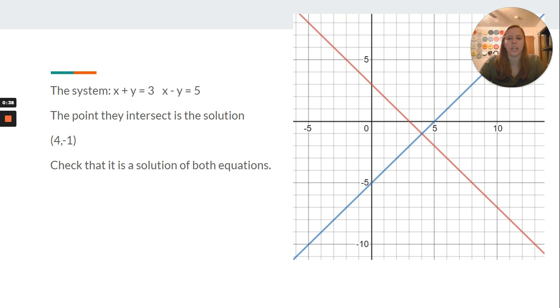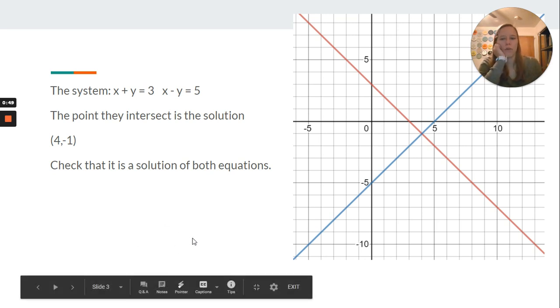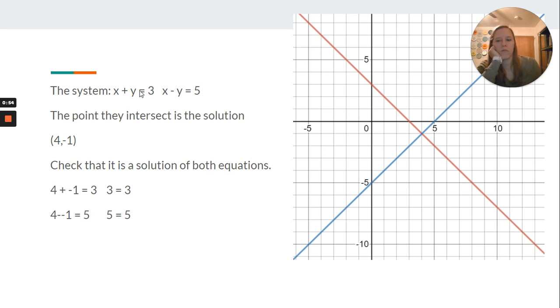Our system is x plus y equals 3, x minus y equals 5. The point they intersect is the solution, you can see that here: 4, negative 1. Check that it is a solution of both equations. 4 plus negative 1 equals 3, yes it does, 3 equals 3. And then x minus y, so 4 minus a negative 1, so 4 plus 1 is 5. 5 equals 5.